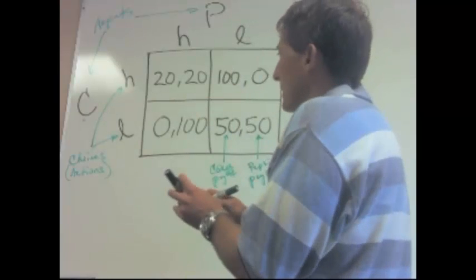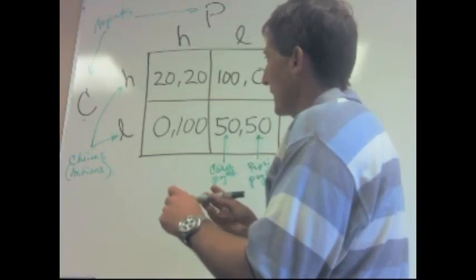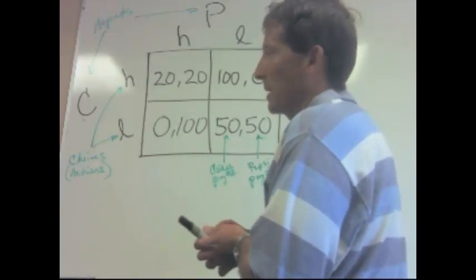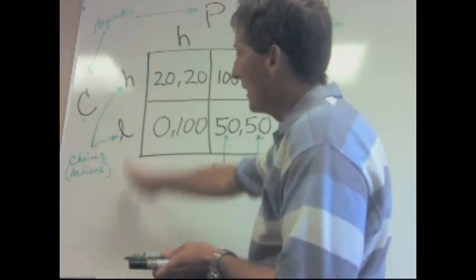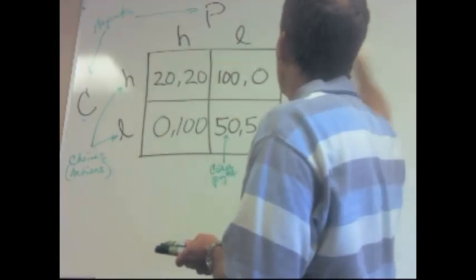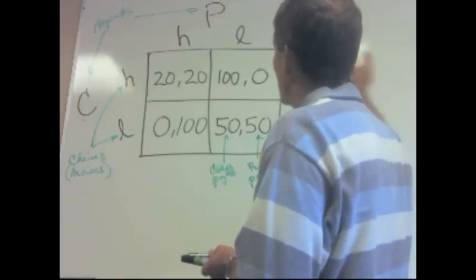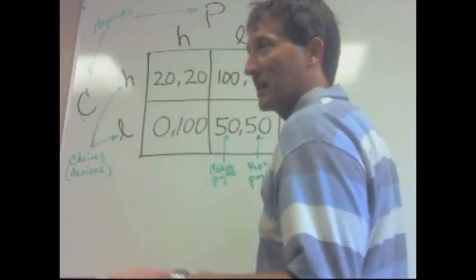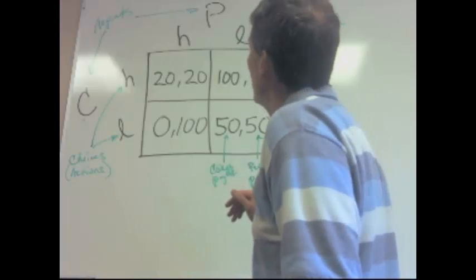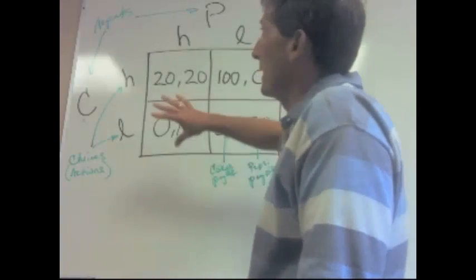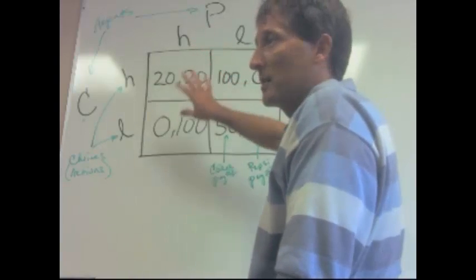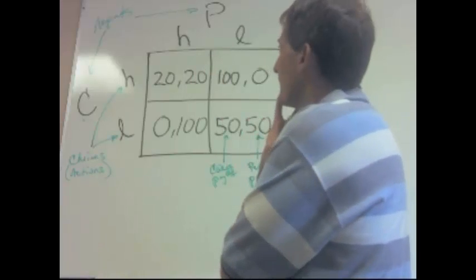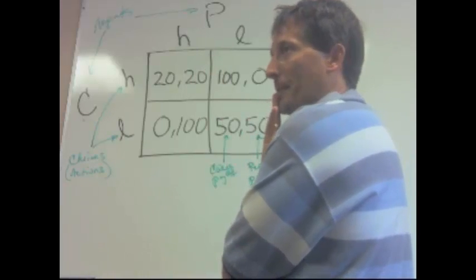So these are the elements that are in place when we put the game in this type of format. What you'll see in your text is that this can be expanded into n choices for each agent. So this could be a four by four matrix or five by five. So it can get more complicated. We can also get into there being more than just two agents. So this is a simple two by two, two agent model. Alright, any questions so far in the setup?